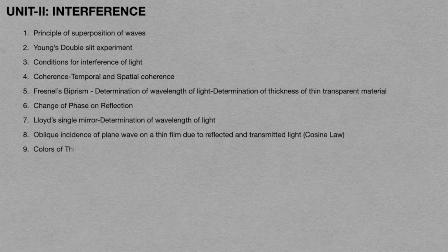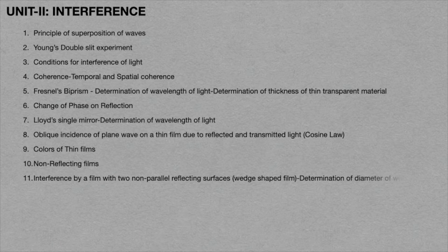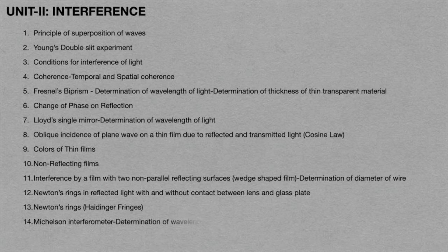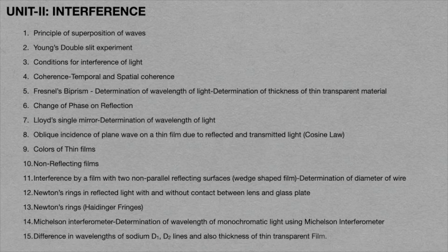Ninth, colors of thin films. Tenth, non-reflecting films. Eleventh, interference by film with two non-parallel reflecting surfaces — that we call a wedge-shaped film — including determination of diameter of wire. Twelfth, Newton's rings in reflected light, with and without contact between lens and glass plate. Thirteenth, Newton's rings for finding air fringes. Fourteenth, Michelson interferometer — determination of wavelength of monochromatic light source. Fifteenth, determination of difference between wavelengths of lines D1 and D2, and evaluating the thickness of thin transparent film using Michelson interferometer. These are the topics I would like to discuss with you.